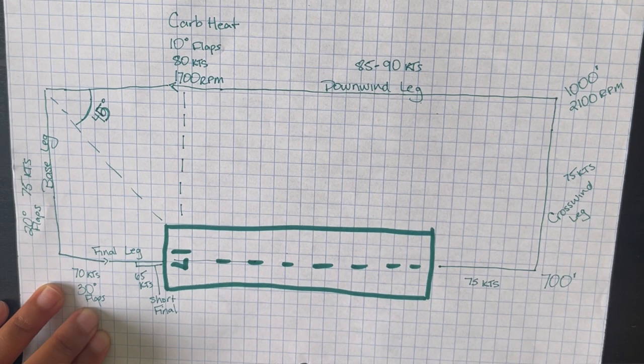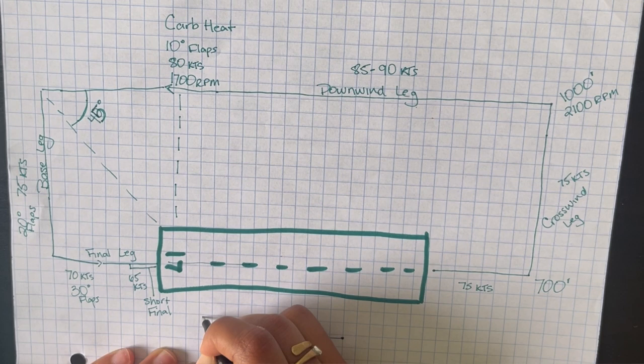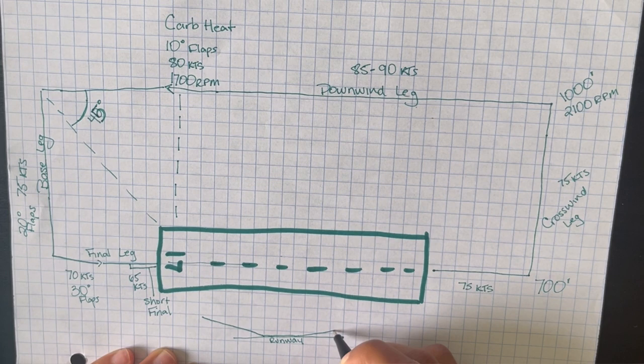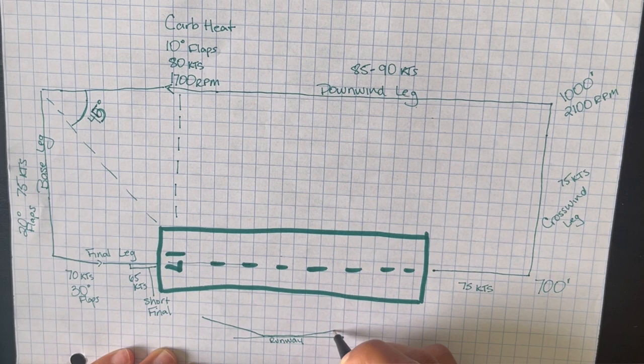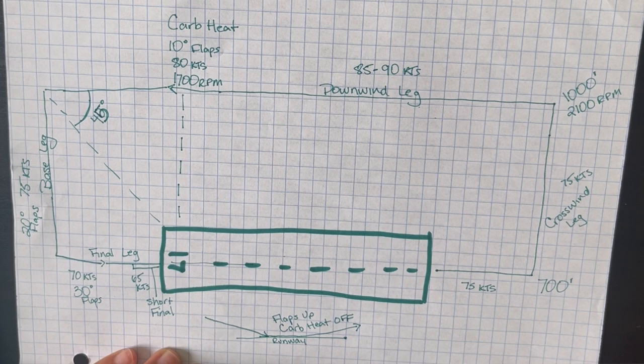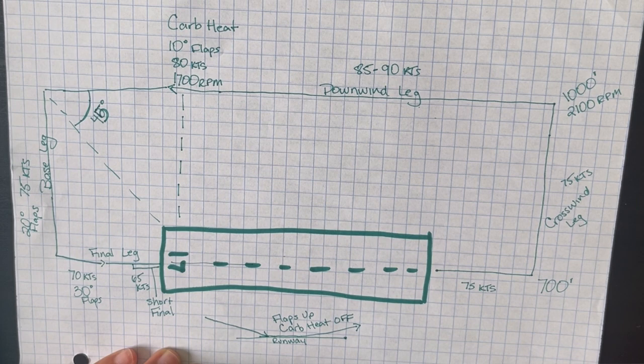When you're flying the pattern you're going to do what's called a touch and go, which means you are going to land and then take off immediately continuing to fly the pattern to get practice. You've landed. There are a couple things you need to do before you can take off. All flaps need to go up, your carb heat if it was turned on needs to be turned off, and you're going to need to put full power in. Once you do those you will get your speed up until you're about 55 to 60 knots and then you're going to take off flying the pattern again.